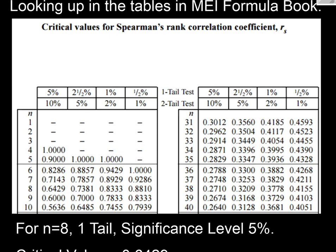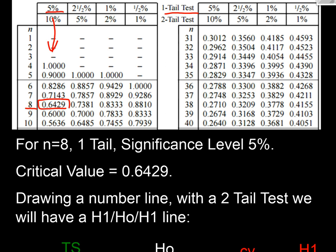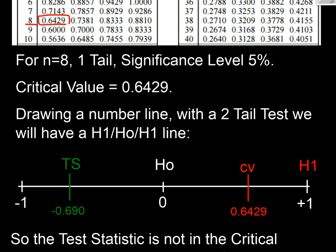And now we're going to look it up in our Spearman table. So we had n competitors—we had 8 competitors, didn't we? We're on a one-tail test, and we're applying five percent, and therefore coming down the column and across the row, our critical value is this one here: 0.6429.